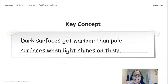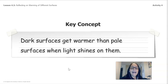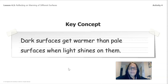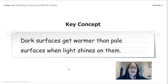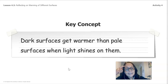Our key concept: dark surfaces get warmer than pale surfaces when light shines on them. The darker the surface, the hotter it's going to get. That's why in the summer people try to wear light clothing — if you wear dark clothing you're going to be hotter. So in the summer it's always good to wear light colors, and in the winter we tend to wear darker colors.